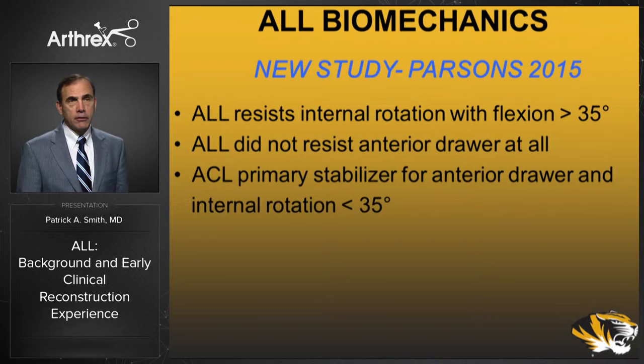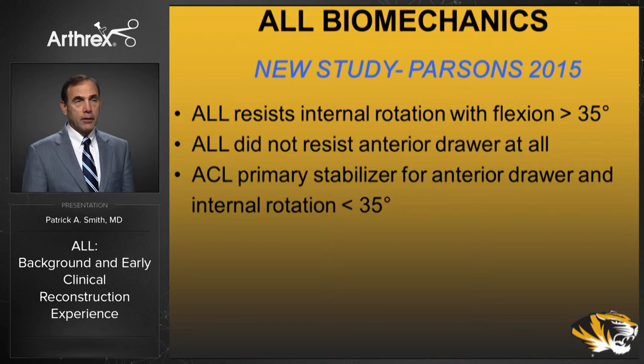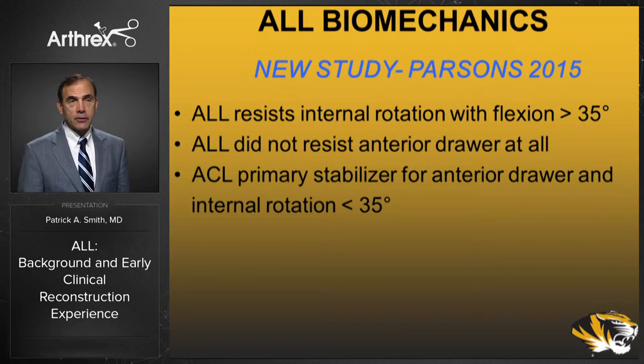A new study from the University of Washington published in 2015 by Parsons also examined ALL biomechanics. Their results showed the ALL resisted internal rotation with the knee flexed greater than 35 degrees, but the ALL did not resist the anterior drawer at all. The ACL was the primary stabilizer for the anterior drawer and for internal rotation less than 35 degrees — confirming what Kleiss found about the ALL's importance past 30 degrees for internal rotational stability.